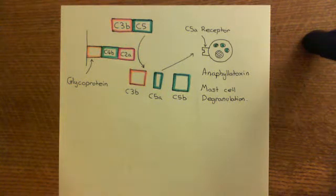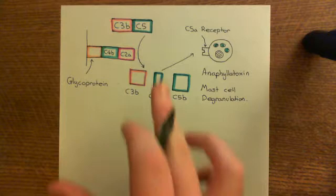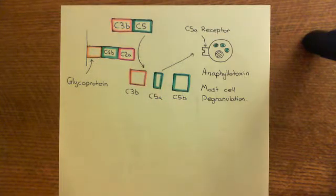Okay, so welcome to this next video in which we are discussing the classical complement pathway. We've just got to the point where we have split C5 into C5A and C5B. We've seen that C5A is another anaphylatoxin like C3A, and now what we want to see is what C5B is going to do.